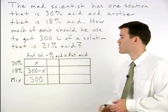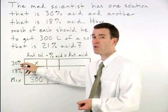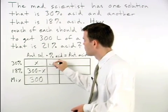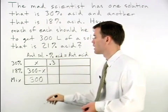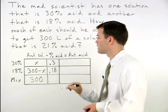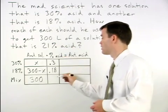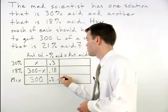For our percent acid column, we have 30% which is .30 or .3, 18% which is .18, and we know that our mixture is 21% acid or .21.